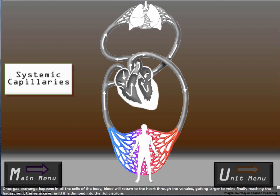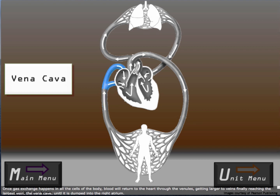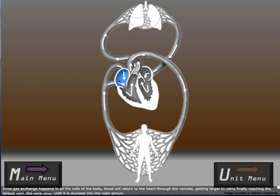Once gas exchange happens in all the cells of the body, blood will return to the heart through the venules, getting larger to veins, and finally reaching the largest vein, the vena cava, until it is dumped into the right atrium.